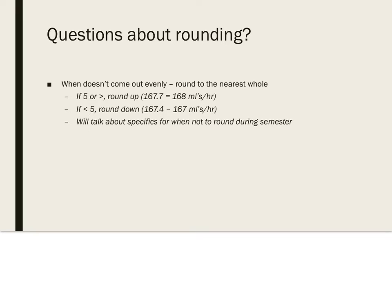Just a reminder about rounding. When it doesn't come out evenly, we round to the nearest whole number. If it's 5 or greater, we round up — so if it were 167.7, we would round up to 168. If below 5, we round down. We will talk about specifics for when we do not round during the semester.